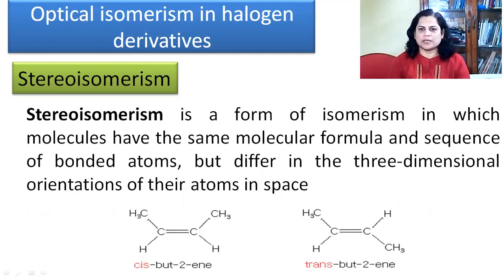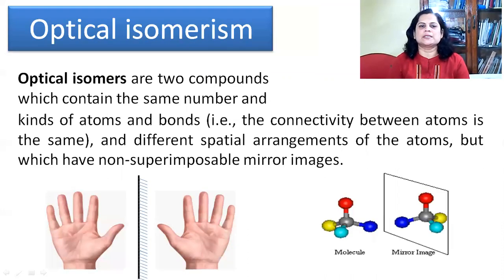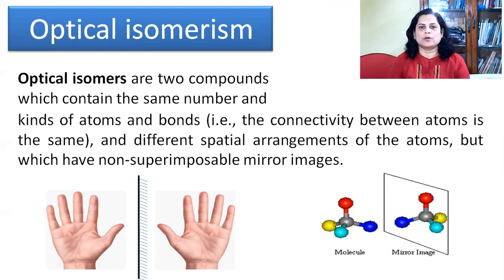Cis and trans forms are geometrical isomers of each other, and geometrical isomerism is one type of stereoisomerism. Similarly, optical isomerism is another type of stereoisomerism. Optical isomers are two compounds which contain the same number and same kind of atoms, and the bonds — that is, the connectivity between atoms — are also the same.